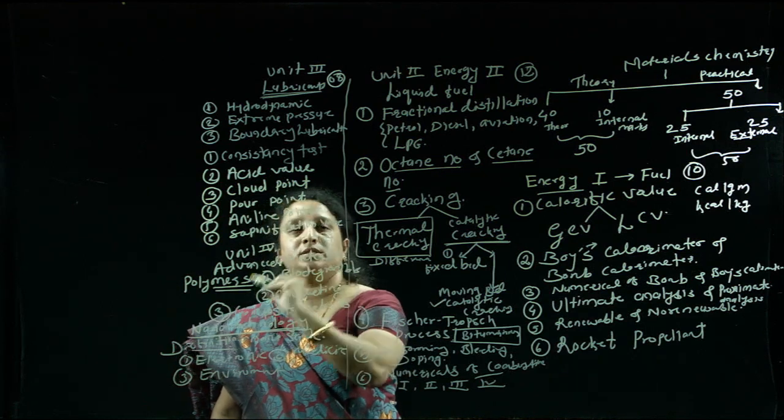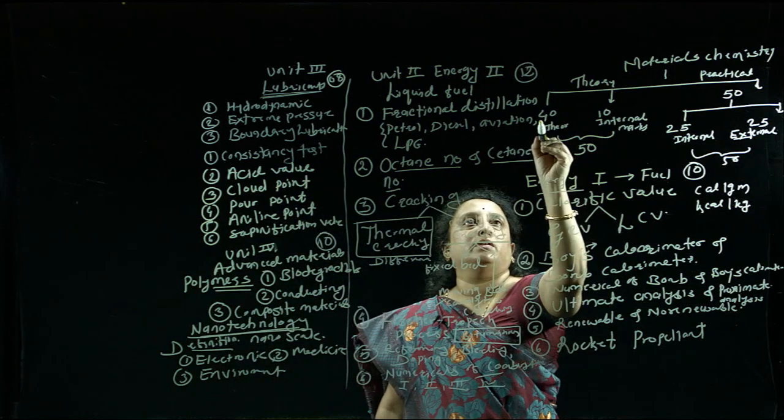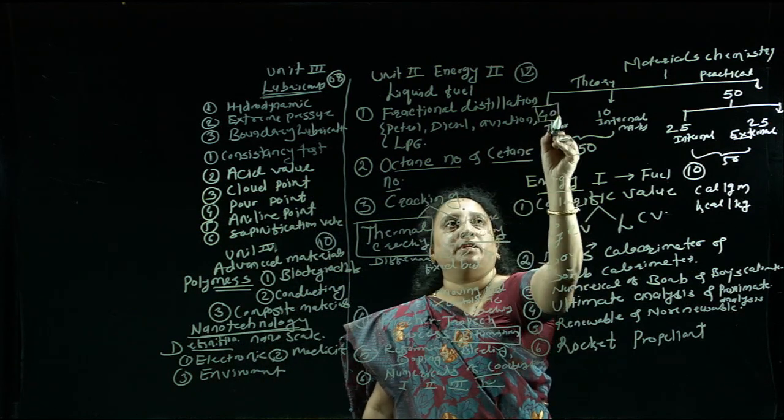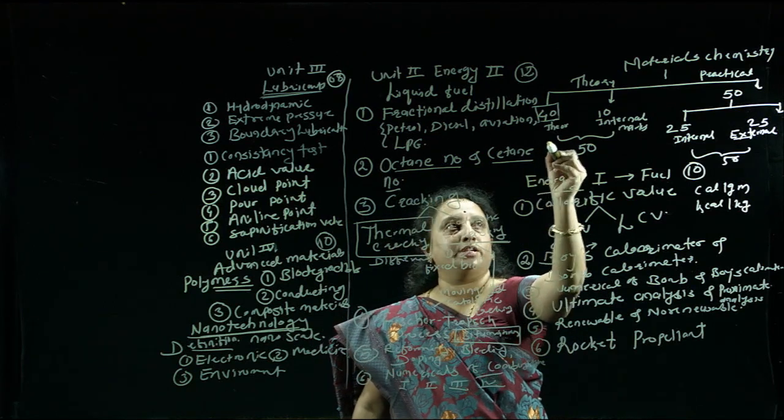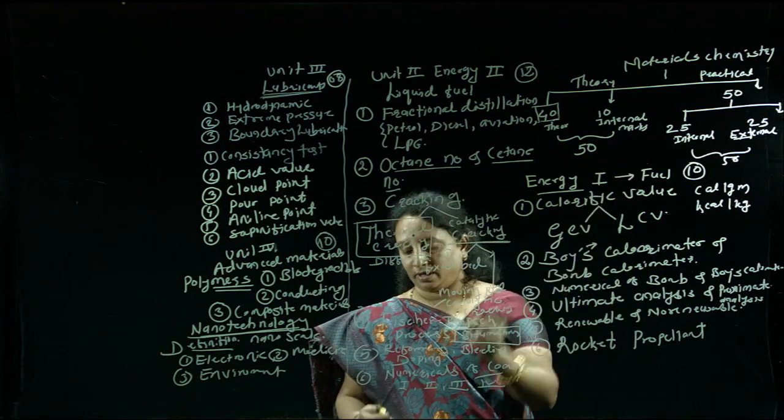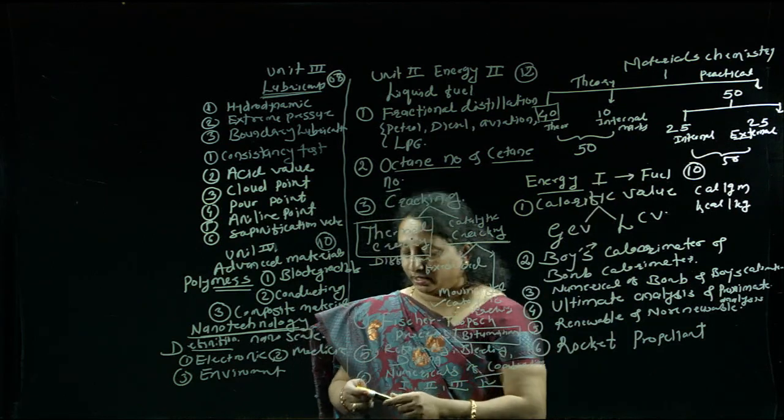The total weightage for this unit, that is 10 marks. The weightage for unit 1 is 10 marks. The weightage for unit 2 is 12 marks. The weightage for unit 3 is 8 marks. The total weightage for this advanced material, that is 10 marks. So the total paper of your theory paper is of 40. This is your syllabus.